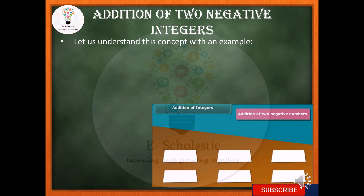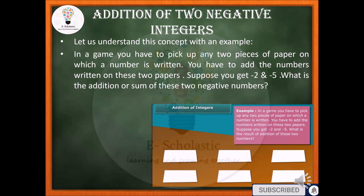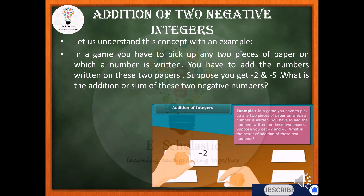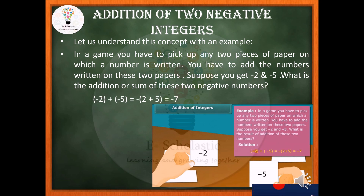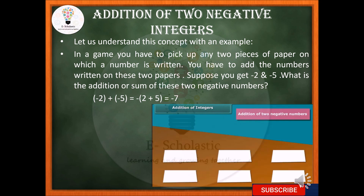To add two negative integers, consider this example: in a game you pick two pieces of paper with numbers written on them. Suppose you get minus 2 and minus 5. The addition will be minus 2 plus minus 5 in brackets. Taking the minus sign common: minus (2 plus 5), which gives you minus 7.